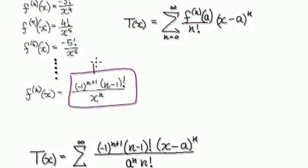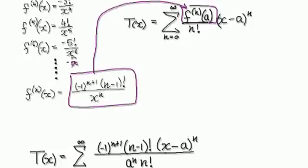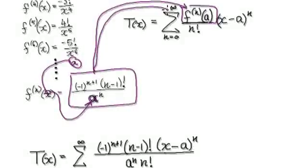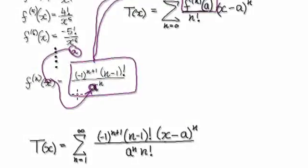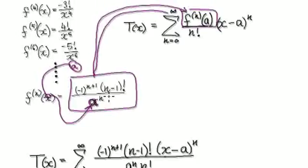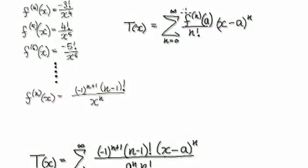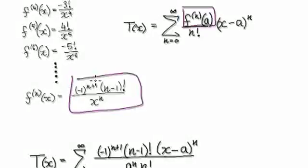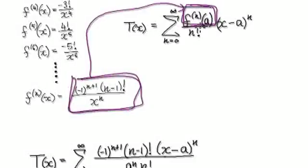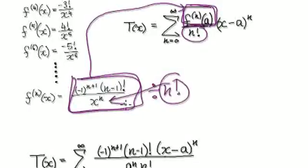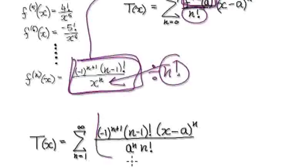When you put this in and evaluate at a, the a goes here, and then you put this into the Taylor formula. This whole thing here would then become this. We also need to divide by n factorial — so this gets multiplied to the bottom — which gives you this result.